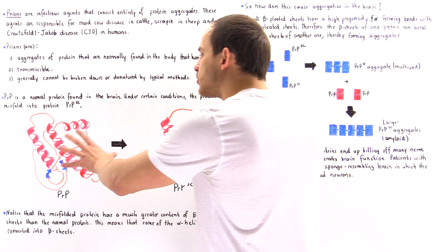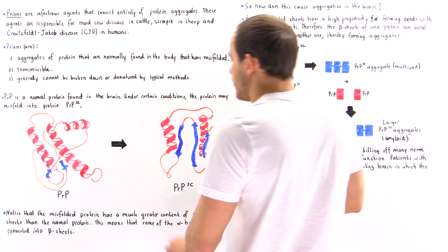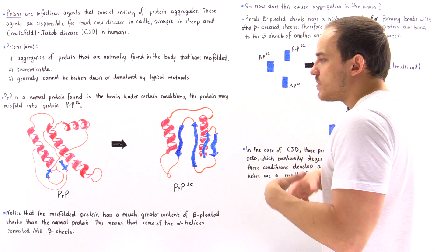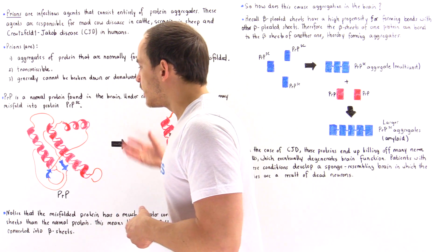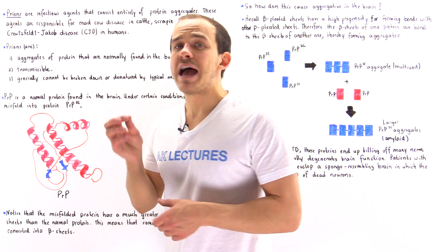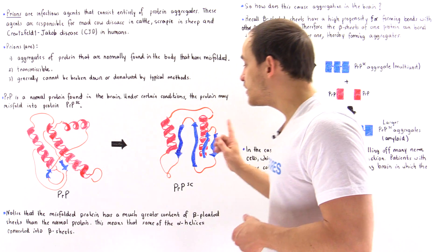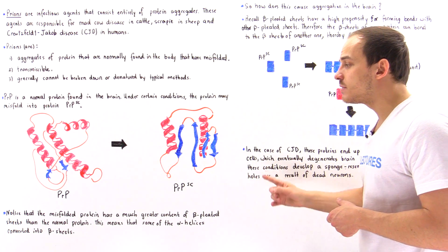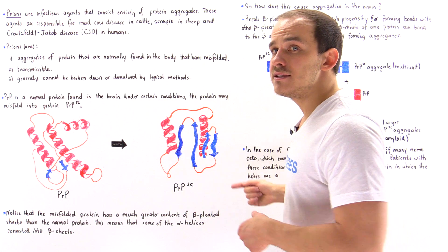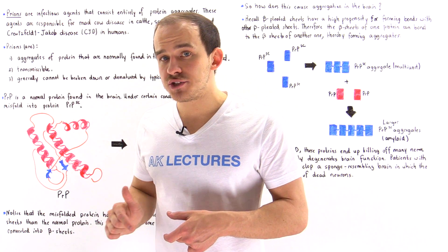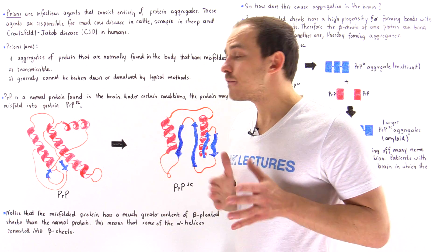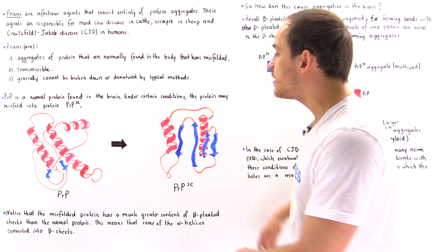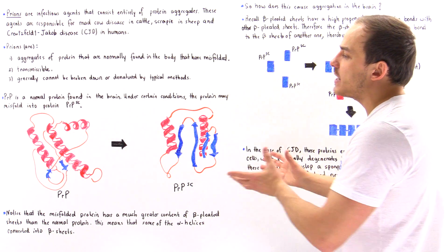What's the major difference between these two proteins? One major difference is that this protein consists predominantly of alpha helices, but in this case it consists predominantly of beta pleated sheets, having a very high content of beta pleated sheets. When this misfolding process takes place, instead of forming alpha helixes, we form beta pleated sheets.